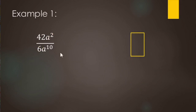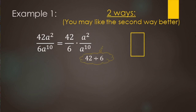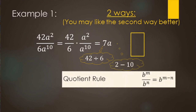Here's an example: 42a squared over 6a to the tenth power. We'll go over two different ways. The first way is you split it up — 42 over 6 (the numbers) and then a squared over a to the tenth (the variables). So 42 divided by 6 makes 7. Then for a squared over a to the tenth, we use the quotient rule and subtract 2 minus 10, giving us a to the negative eighth.